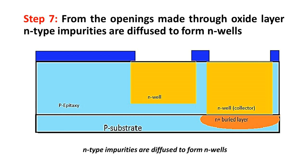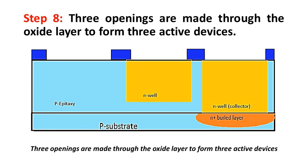Step 7: From the openings made through the oxide layer, N-type impurities are diffused to form N-wells.